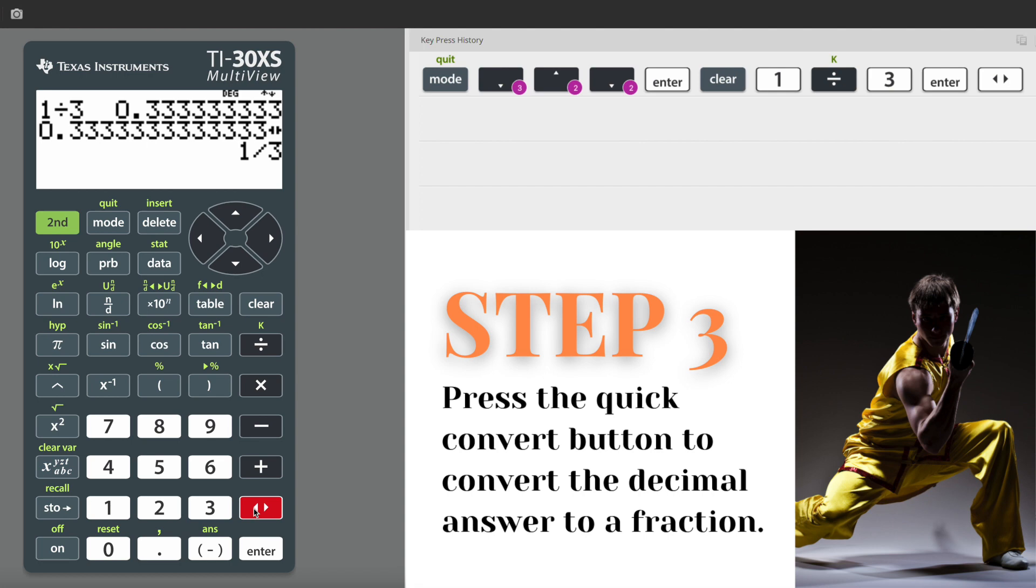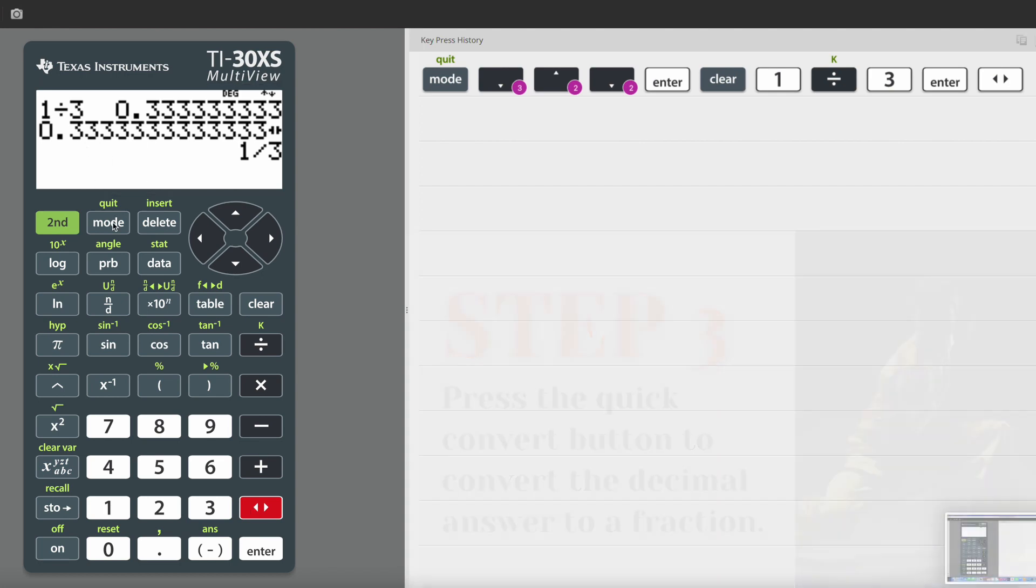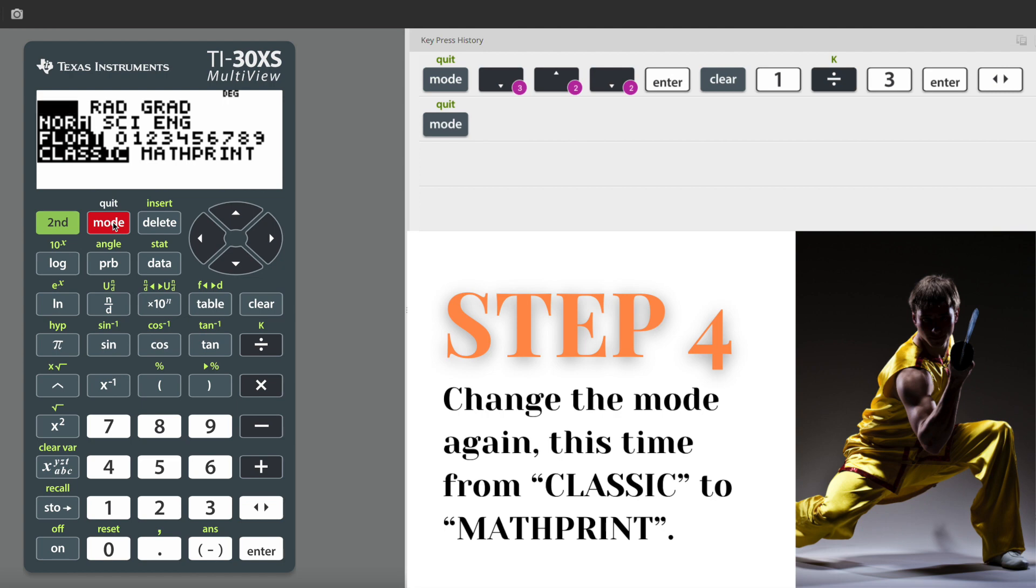Now let's go ahead and change the mode again. So hit mode for me and now I want it back in math print. So navigating down to that fourth line with the arrows, I go over to math print till it's blinking there. Press enter to select and clear to get out of the screen. Nice.